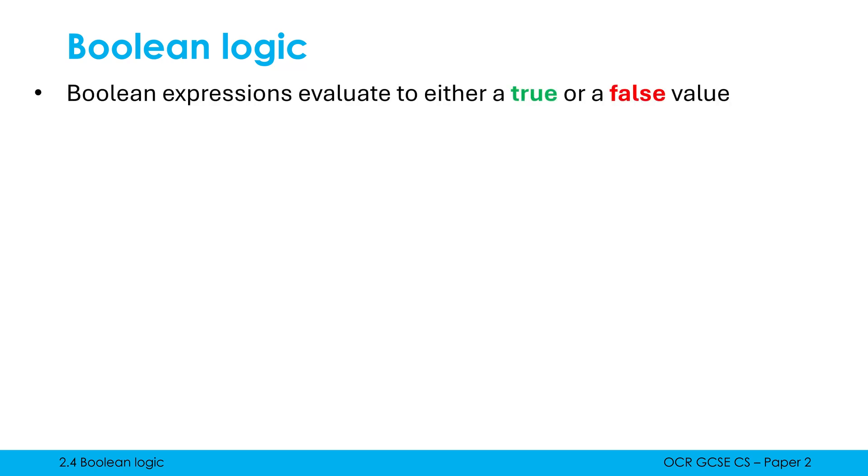And a Boolean expression is an expression which evaluates to either true or false. The word evaluate in this context just means outputting or leading to, and an expression is a combination of values and operations which does something. This relates to programming because we use Boolean expressions all the time in programming.